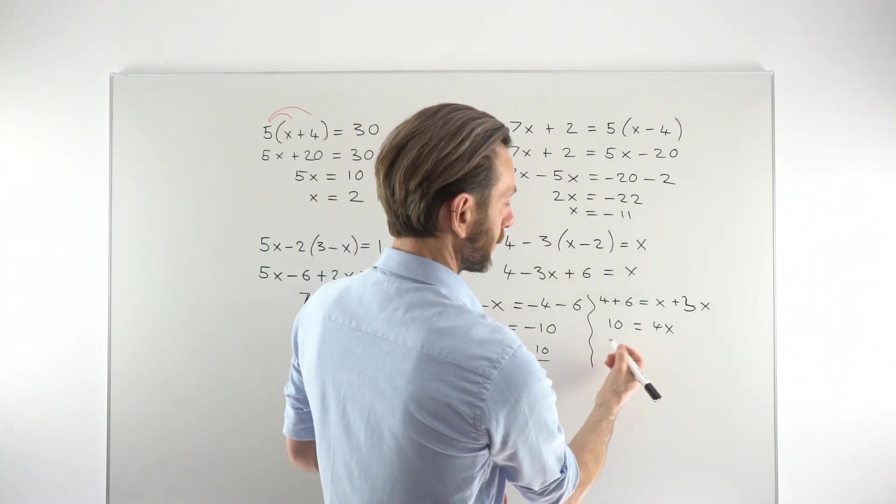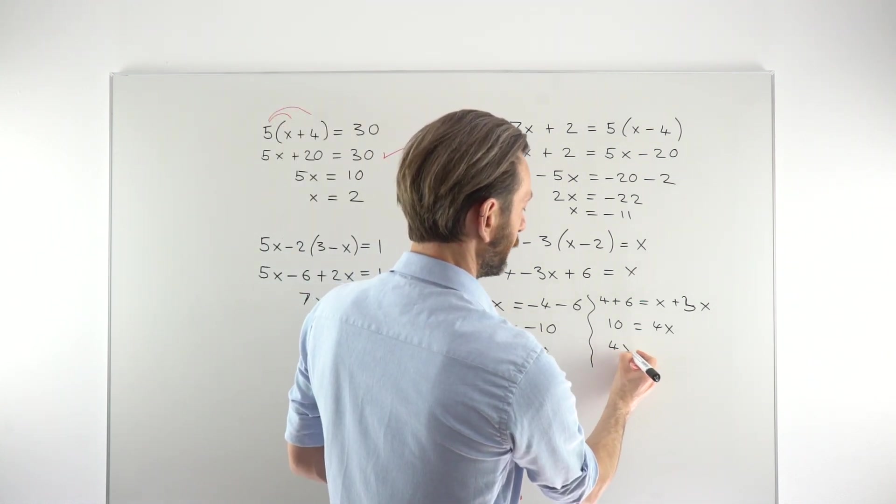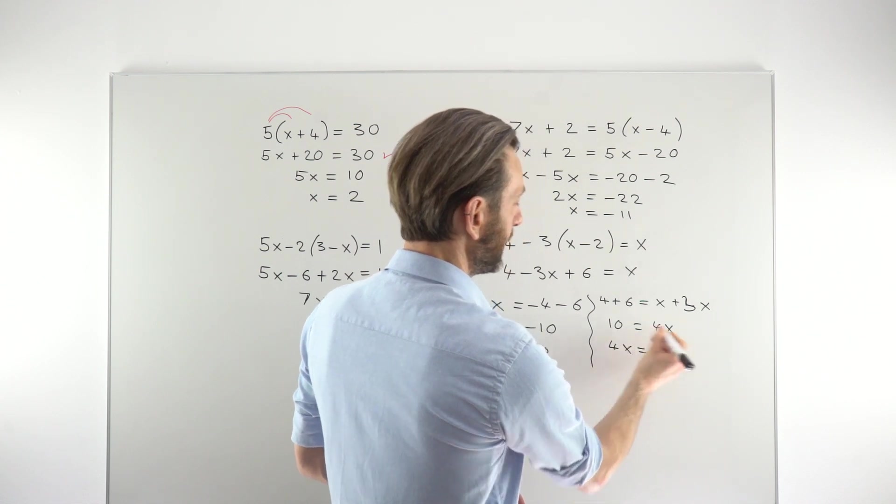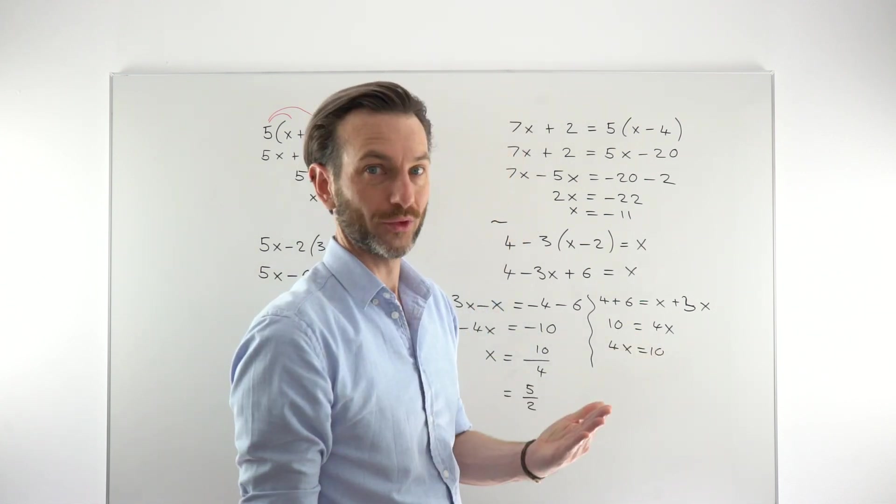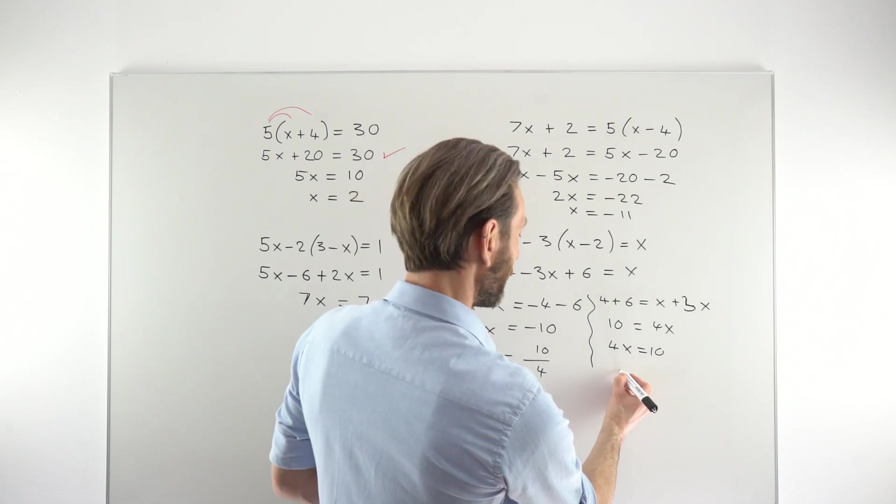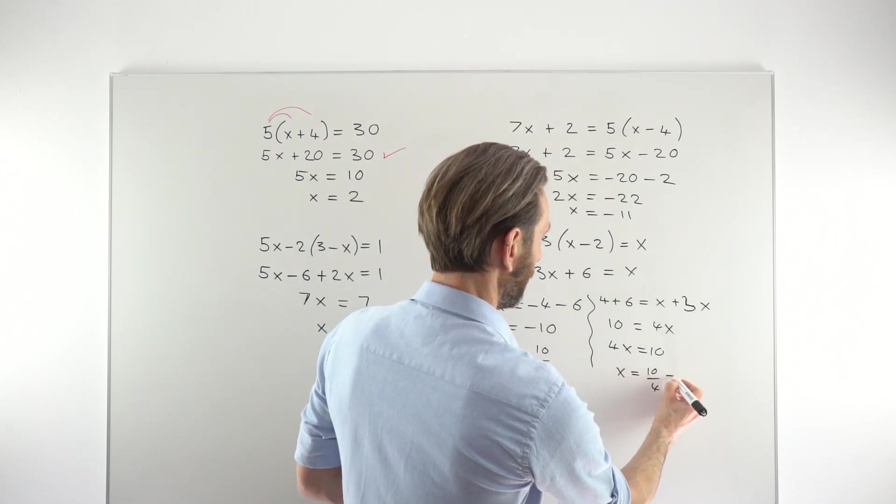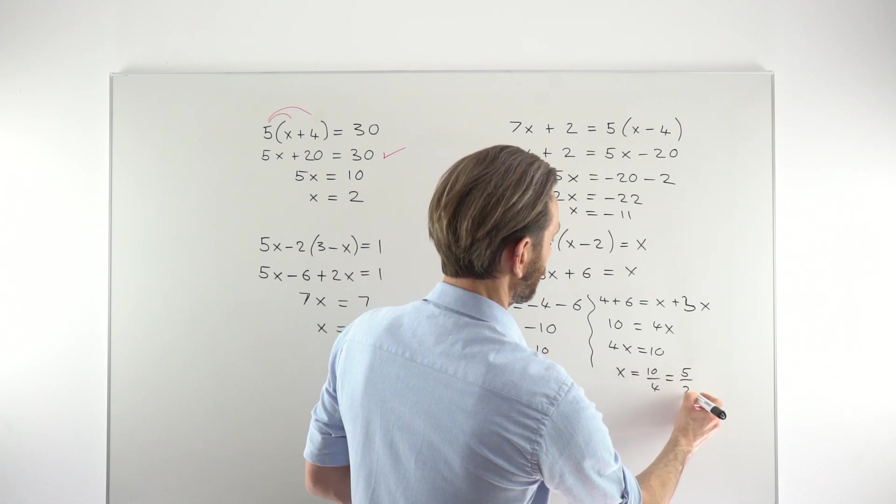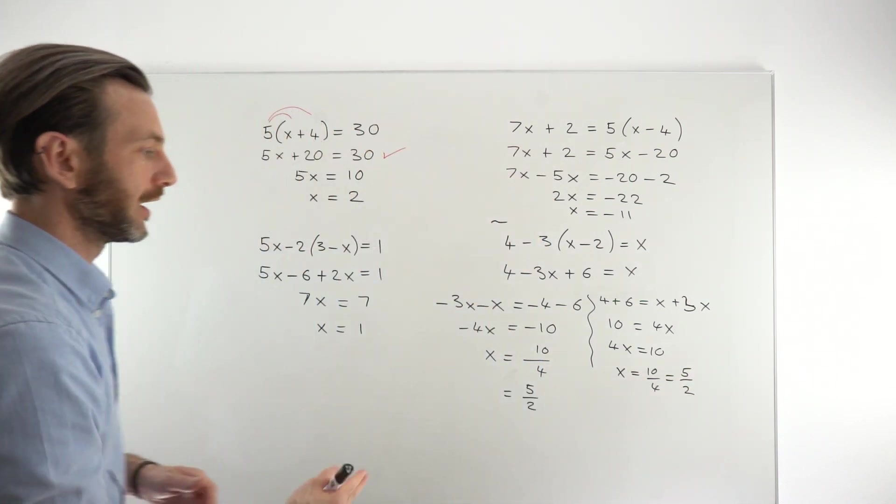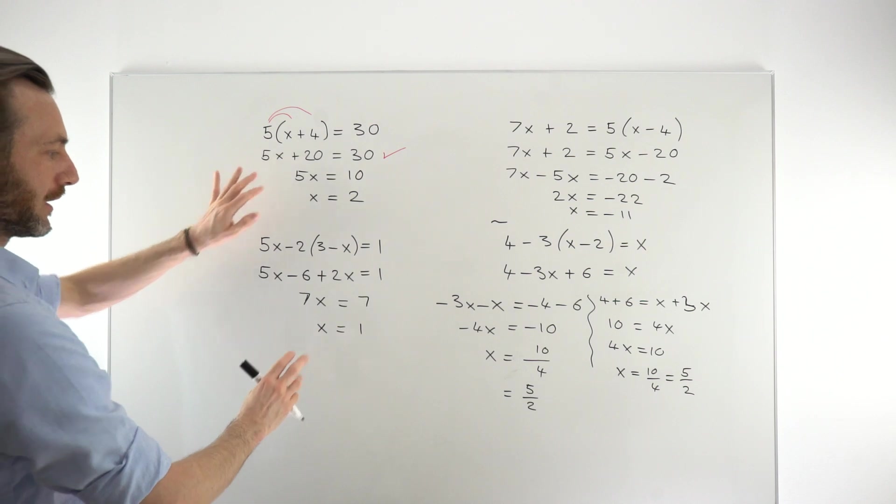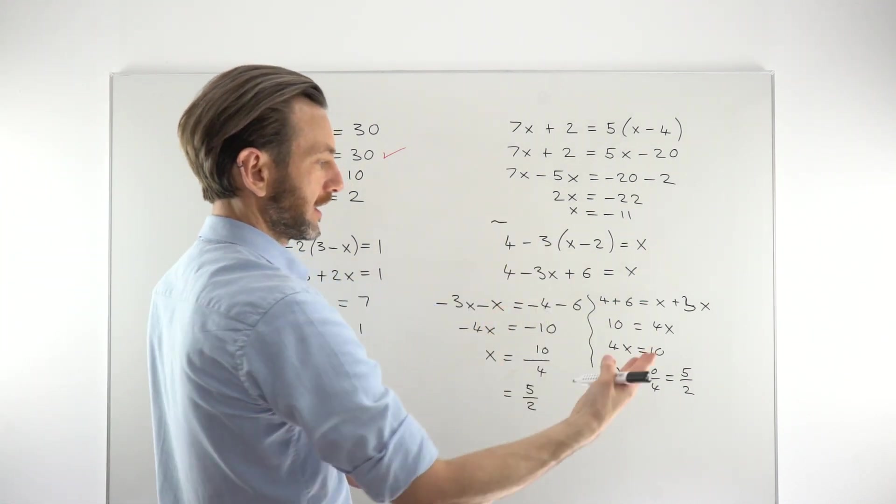But what you can do is actually just spin the equation around to make it 4x equals 10. If 10 equals 4x, then 4x equals 10. It doesn't matter which way you do it. So you would just then divide to get 10 over 4, simplifying that to 5 over 2. So it doesn't matter if you gather things on the left or the right. That would be the same for all of these. You'll get the same answer.